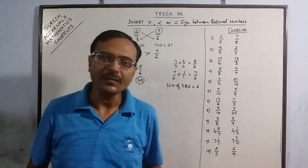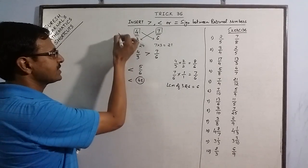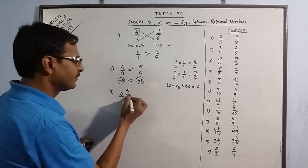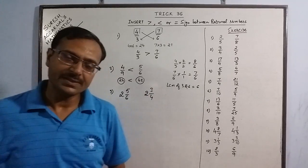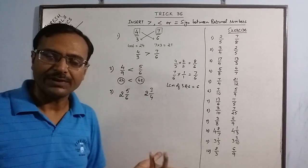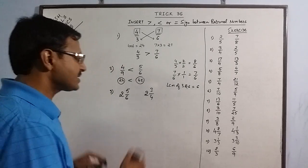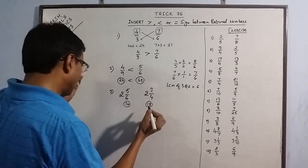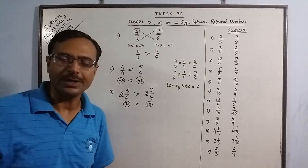Now coming to mixed fractions — in case of mixed fractions you can follow the same procedure. Say we have to compare 2 and 5/6 with 2 and 3/4. When comparing two mixed fractions with the same whole number part, we just compare the fractional parts: 5/6 and 3/4. Cross-multiply: 5 times 4 is 20 and 6 times 3 is 18. Since 20 is greater, the mixed fraction 2 and 5/6 is greater than 2 and 3/4.